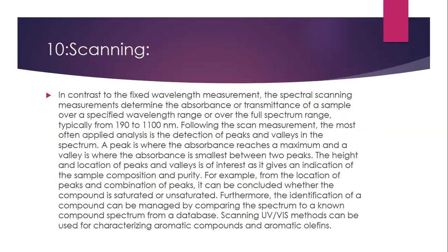The last application is scanning. In contrast to fixed wavelength measurement, spectral scanning determines the absorbance or transmittance of a sample over a specified wavelength range, or over the full spectrum range, typically from 190 to 1100 nanometers. The most commonly applied analysis following a scan measurement is the detection of peaks and valleys in the spectrum. A peak is where absorbance reaches a maximum and a valley is where absorbance is smallest between two peaks. The height and location of peaks and valleys indicates sample composition and purity. From the location and combination of peaks it can be concluded whether a compound is saturated or unsaturated, and compounds can be identified by comparing the spectrum to a database of known compound spectra. UV visible methods can also be used for characterization of aromatic compounds.